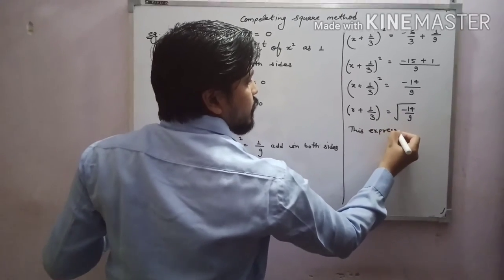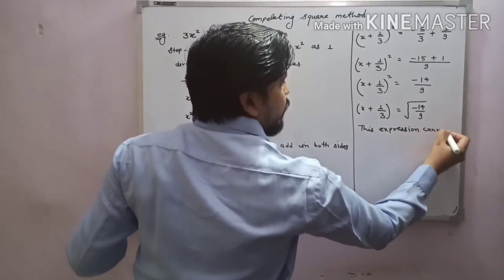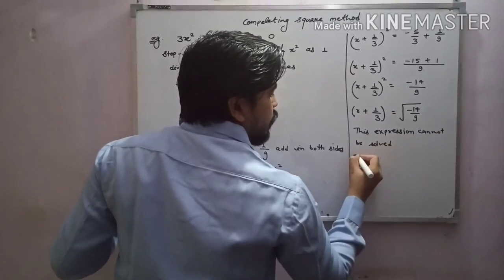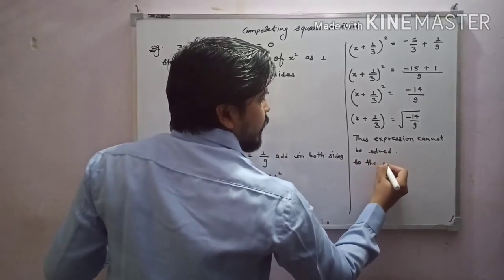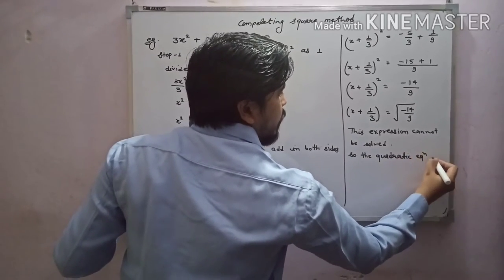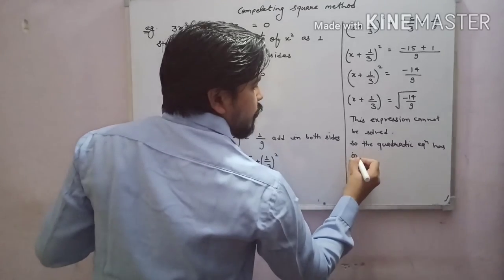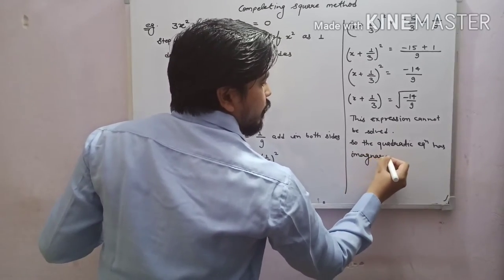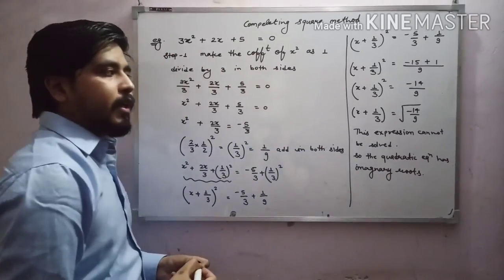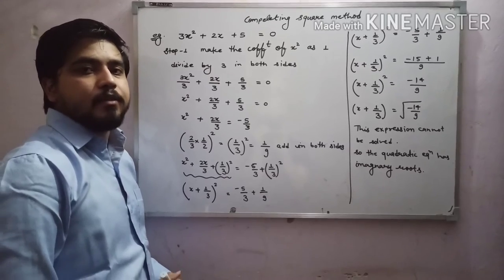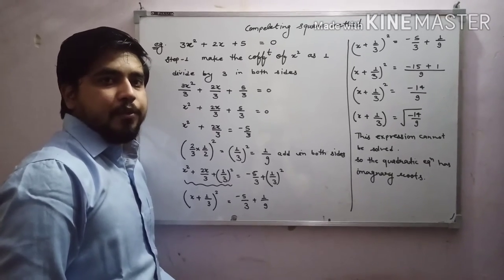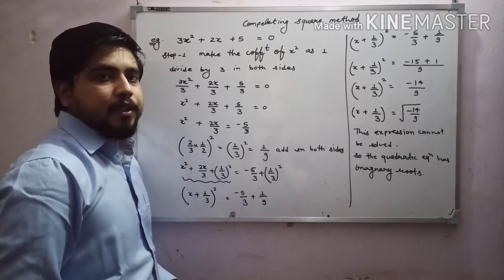This expression cannot be solved further. The quadratic equation has imaginary roots, because under the square root there is a negative term. So the roots are imaginary. Now pause the video — we will take one more example.